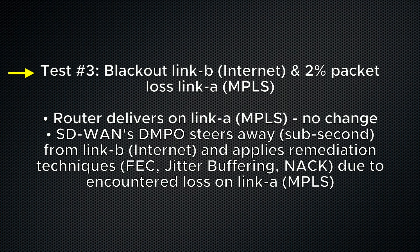In our last test, we're going to remove Internet Link B altogether, forcing both networks to deliver traffic on the MPLS Link A, which still has 2% packet loss. Again, there is no change to the traditional network since the MPLS link is still functional, although suffering from high loss. In the case of VMware SD-WAN, DMPO will react immediately by steering the traffic back to the healthier link, but also dynamically start remediation techniques of forward error correction and jitter buffering to address the issue encountered when facing 2% loss on this link.